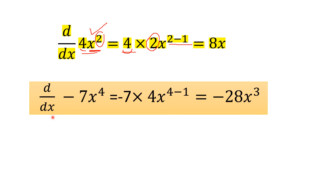Similarly, for d by dx of minus 7x power 4: the coefficient minus 7 stays as a multiplier in the answer. Applying the power rule to x power 4, the power 4 comes to the beginning. Minus 7 multiplied by 4 gives minus 28, and x power 4 minus 1 gives x power 3. So the derivative of minus 7x power 4 is minus 28x power 3.